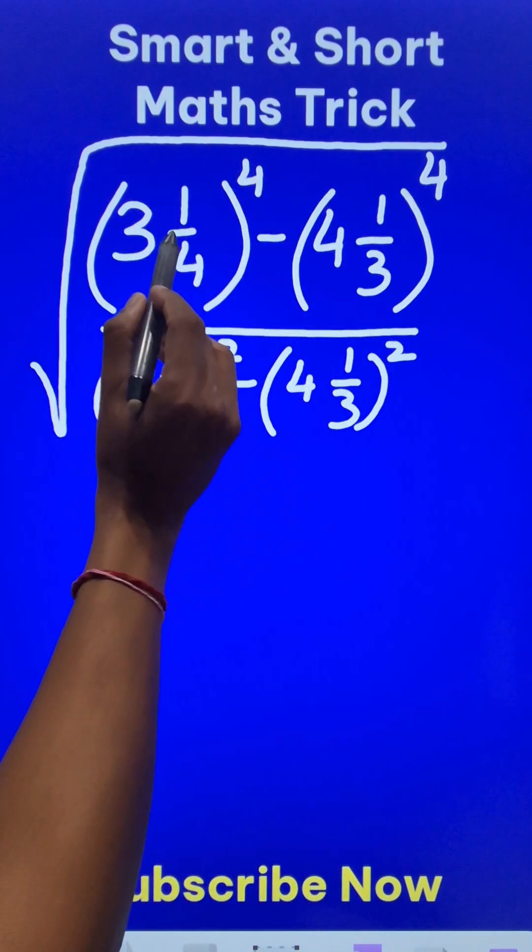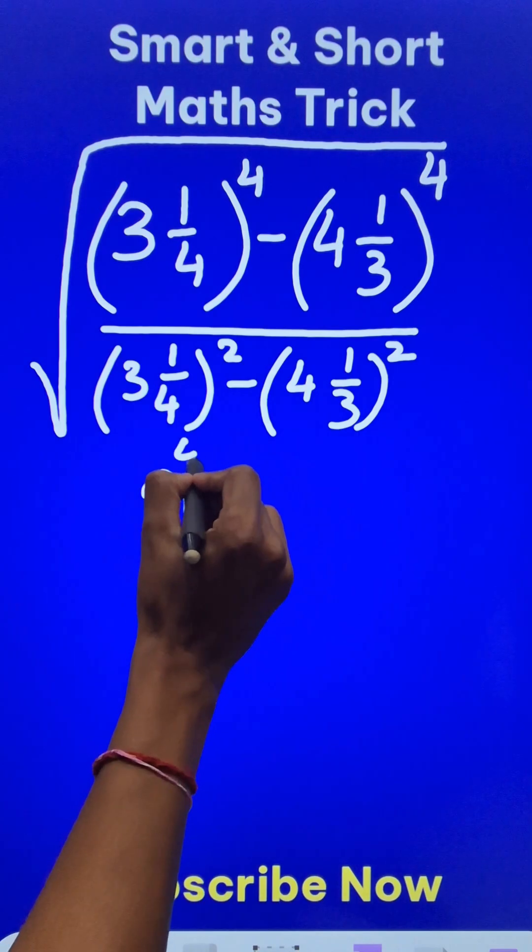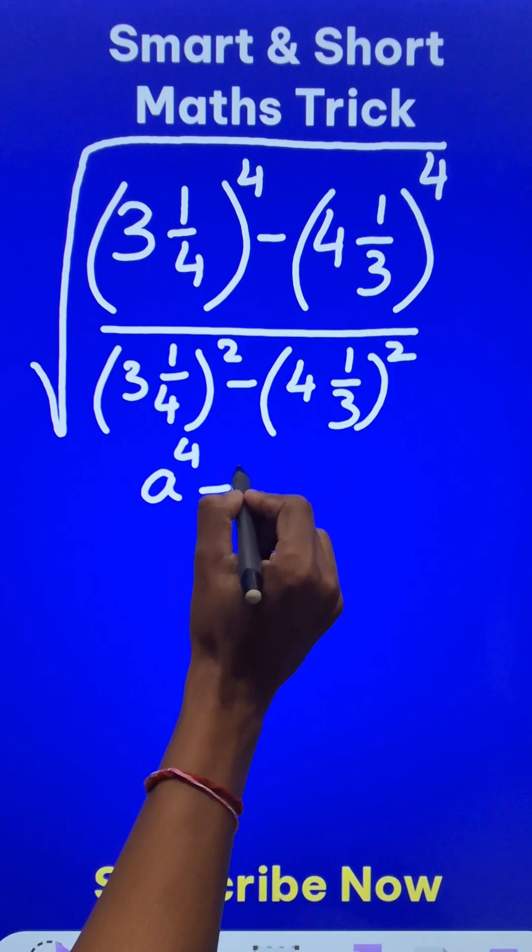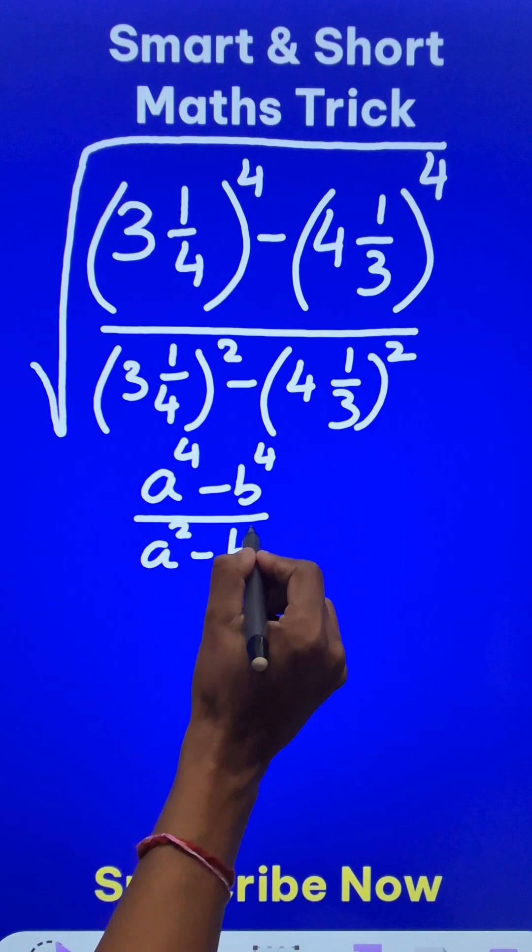In the square root, you find this number 3 1/4th, let's represent it by a, so a power 4 and then b power 4. And in the denominator, you have the same two terms with a square, so a square minus b square.